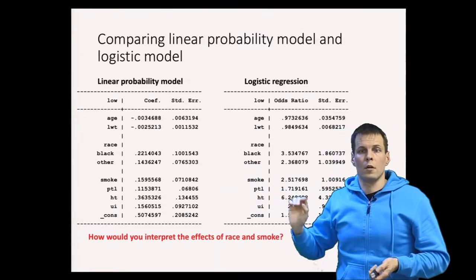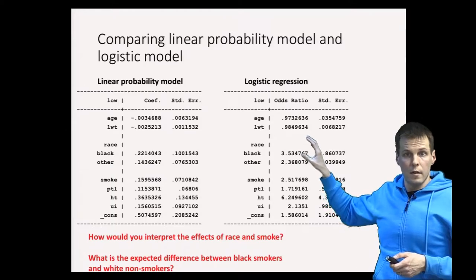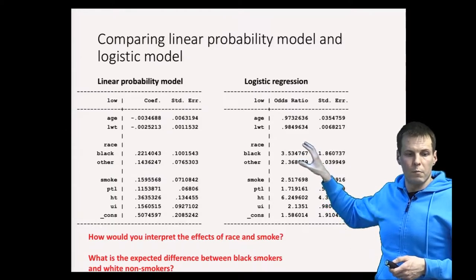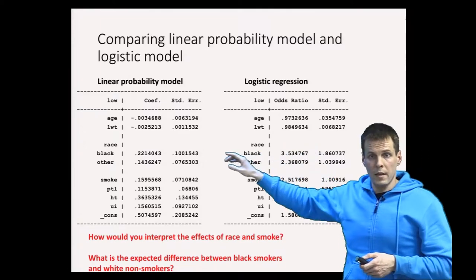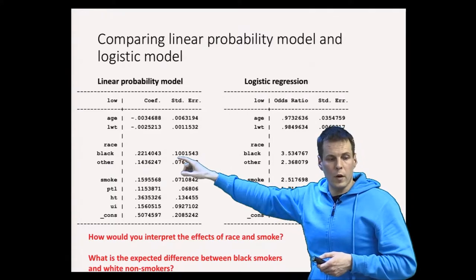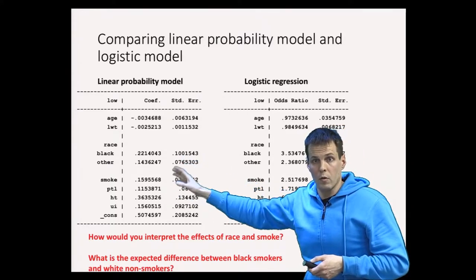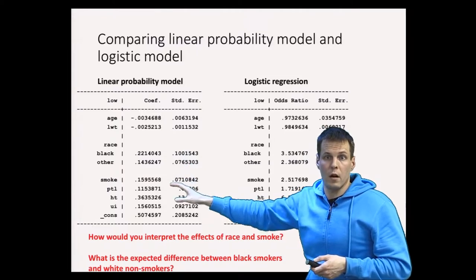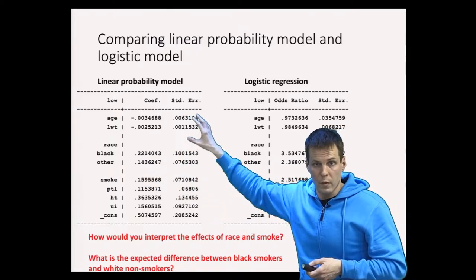Also, we can't from this model directly say what is the expected difference between black smokers and white non-smokers. The whites are the base category here, so black mothers is 0.22 and smokers is 0.16, so it's about 40% difference between black smokers and white non-smokers. Easy to see from this model.